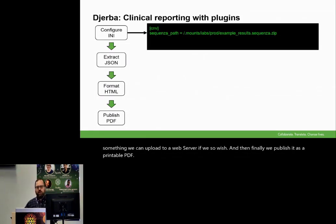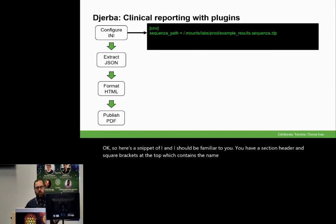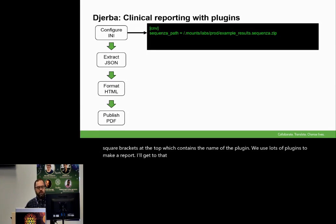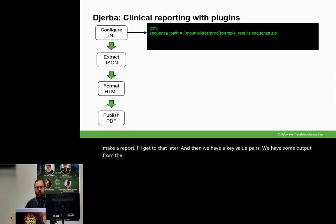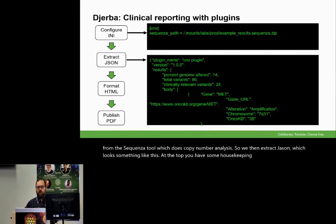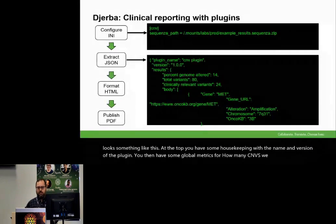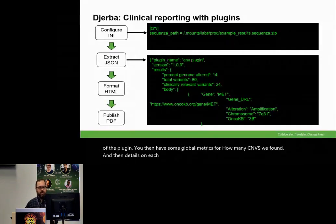Here's a snippet of INI. You have a section header in square brackets at the top, which contains the name of the plugin. We use lots of plugins to make a report. Then we have a key-value pair — so we have some output from the Sequenza tool, which does copy number analysis. We then extract JSON, which looks something like this. At the top, you have some housekeeping with the name and version of the plugin. You then have some global metrics for how many CNVs we found, and then details on each individual oncogenic CNV of interest.